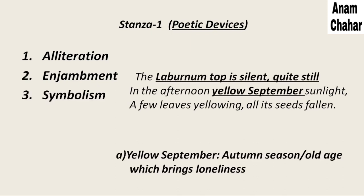Symbolism has also been used. The Lebanon top is silent, quiet, still — it is a symbol of silence and peace that prevails during the autumn season. A second example of symbolism is 'yellow September sunlight.' Yellow September is a symbol of autumn season; it is a season of old age which brings loneliness.